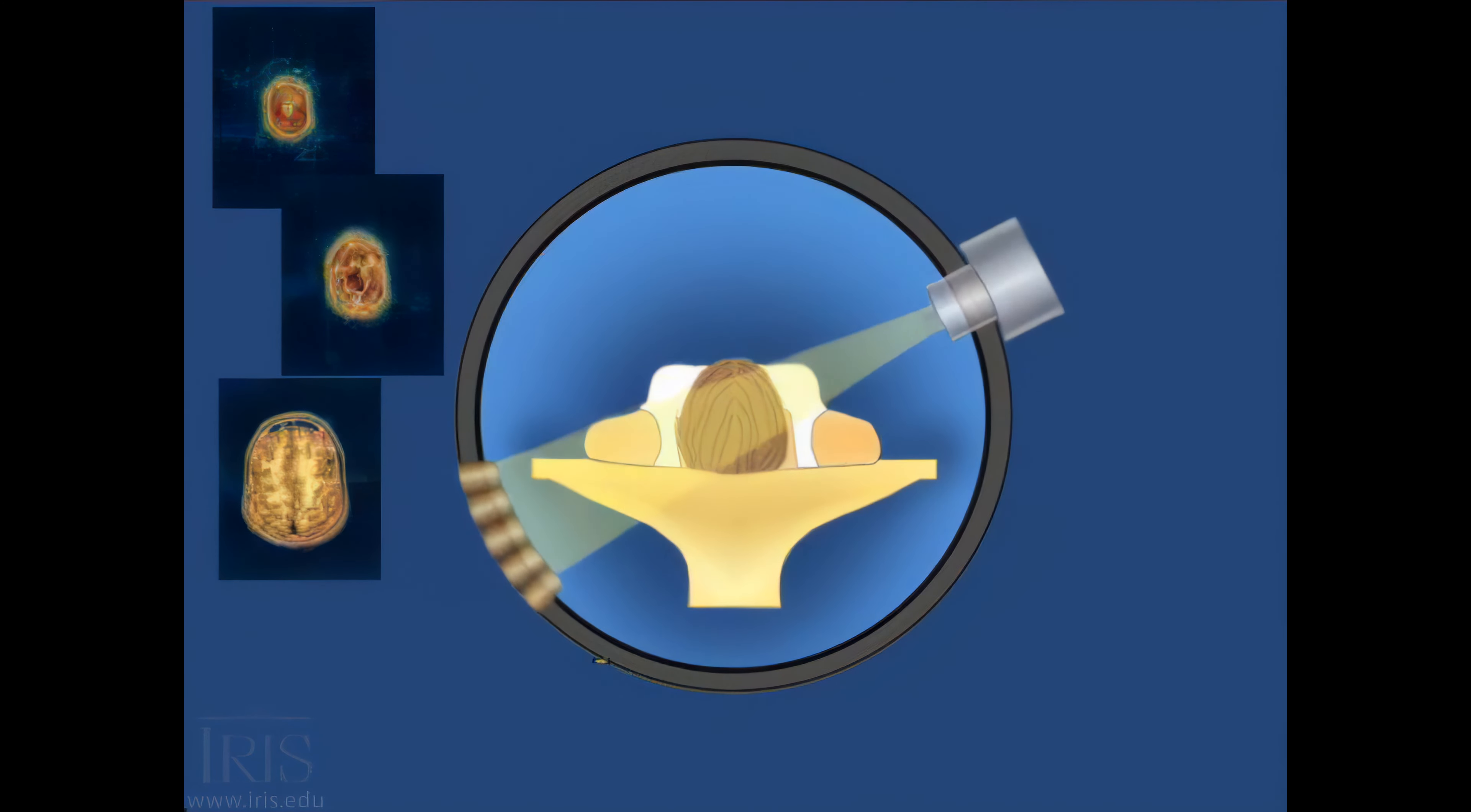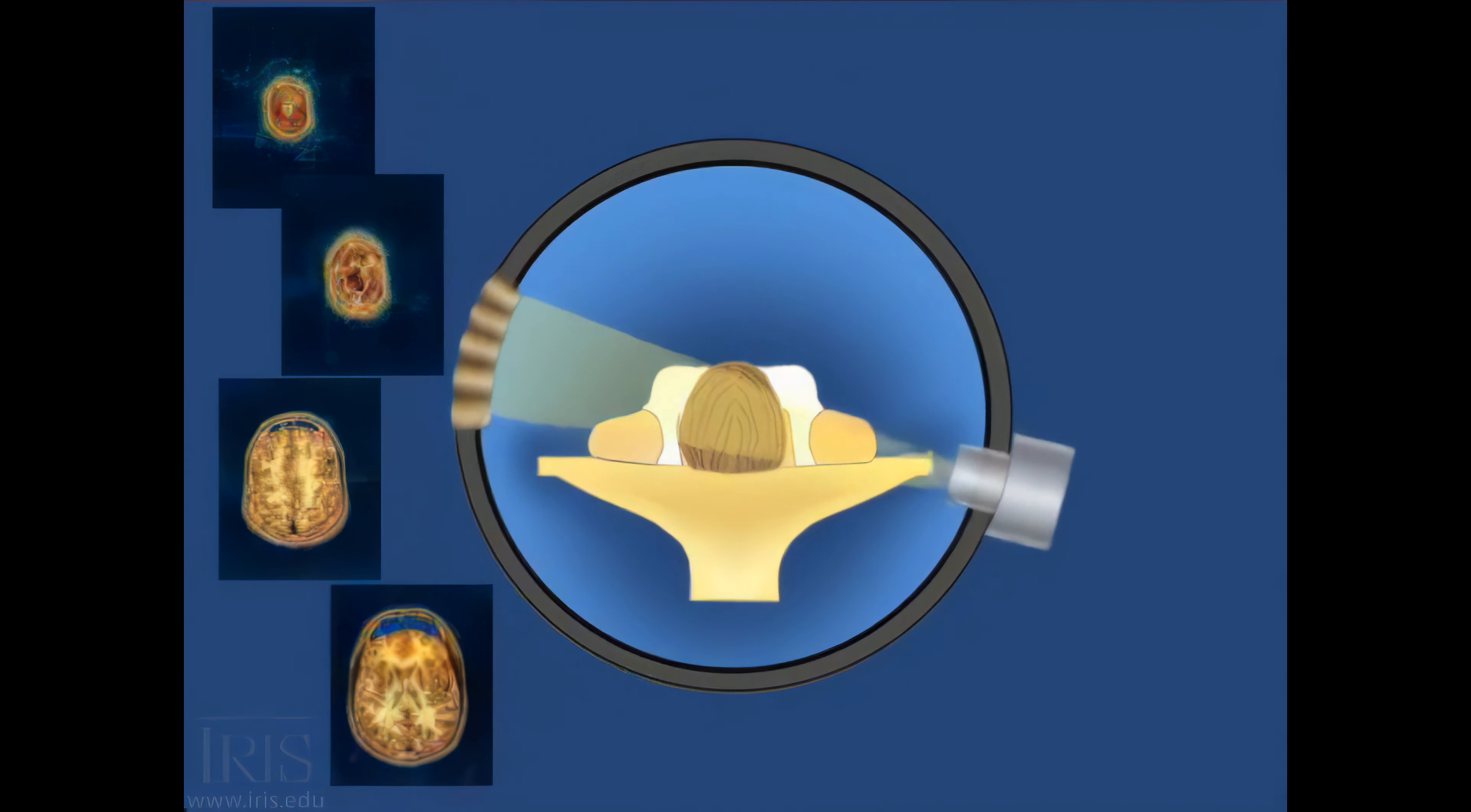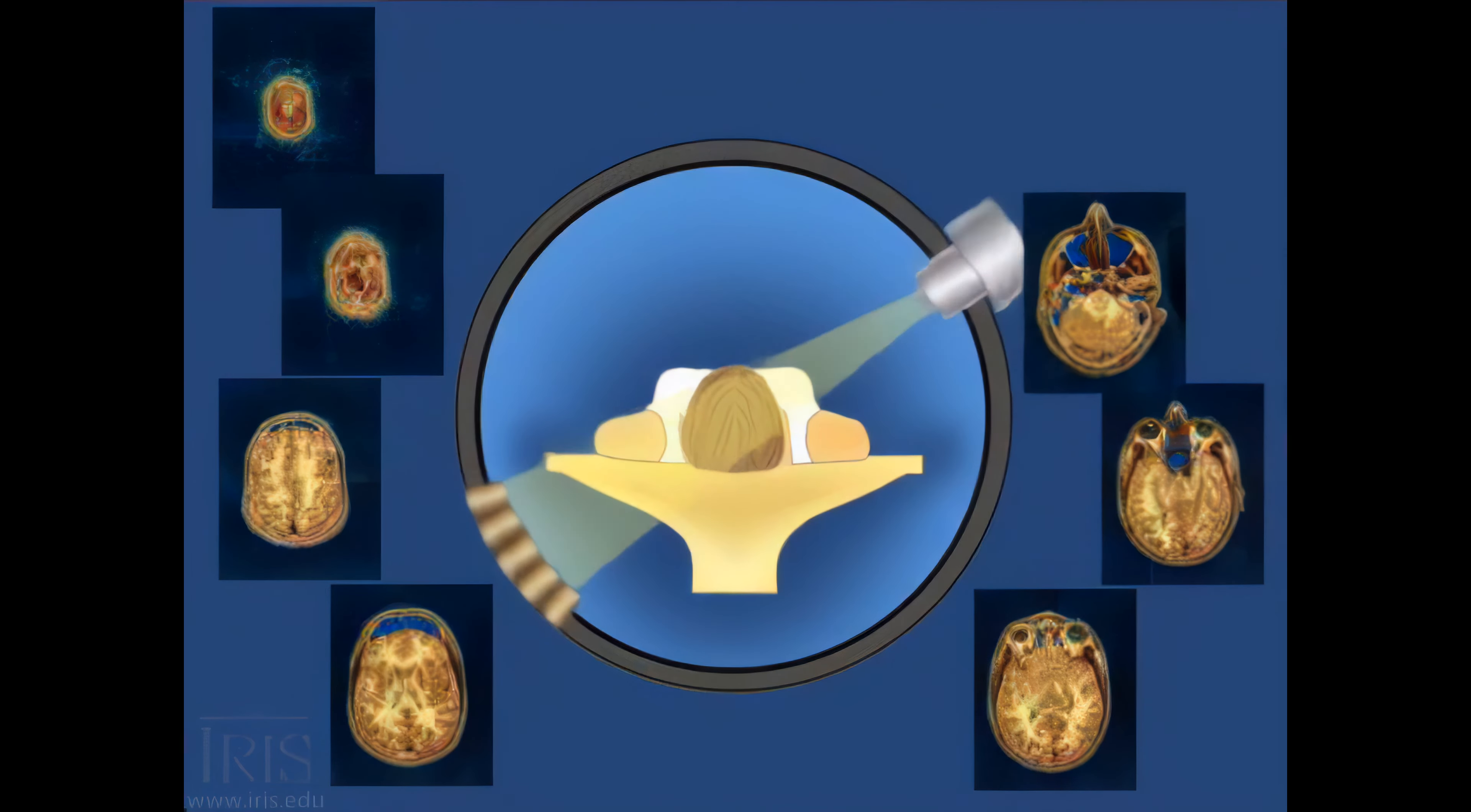Every rotation, here speeded up, yields an image of a new slice as it moves through the length of the target, in this case through the head of the person who is lying in the chamber.